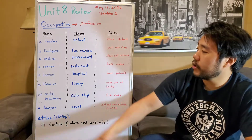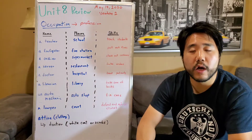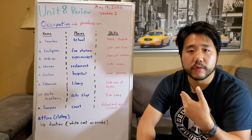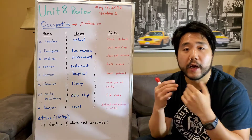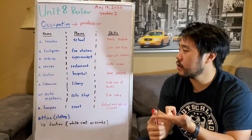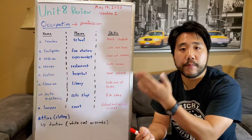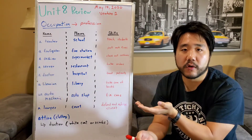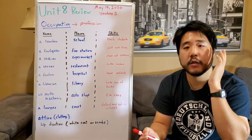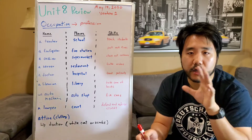Another example: if we're at a restaurant and a person is taking my order for food, I can safely assume that person's occupation is a server. So we look for hints when we're trying to identify an occupation.